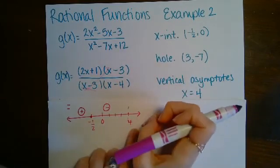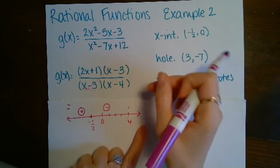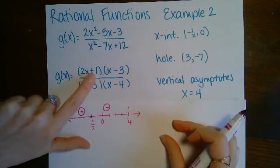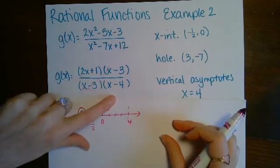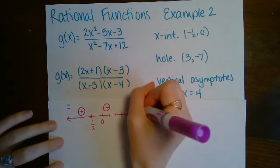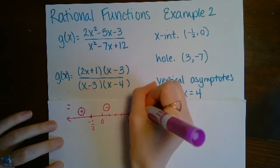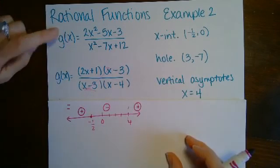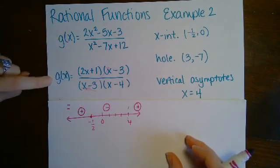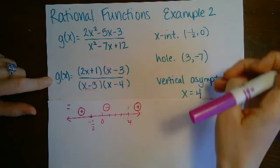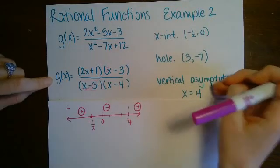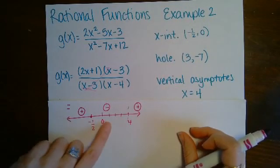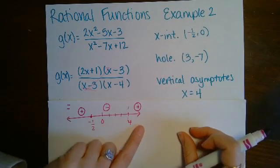For a number greater than four, ten works well. Two times ten plus one is very positive, and ten minus four is also positive — so the result is positive. When you're given a function in standard and factored form, you'll likely have already factored it, so you want to use the factored form when doing your sign analysis.